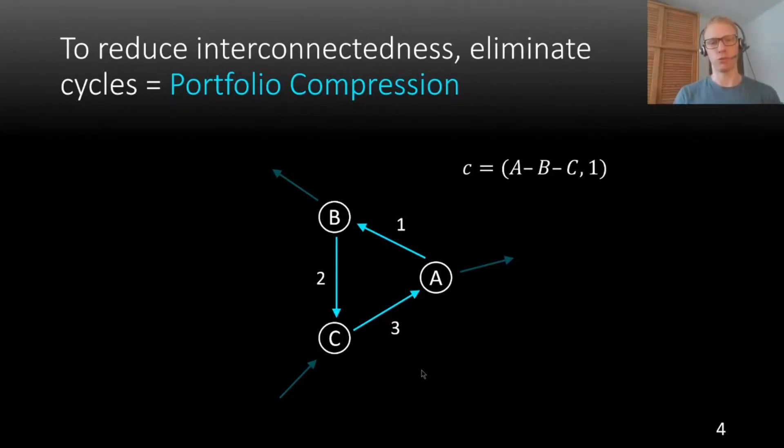So if now this compression is executed, we reduce the amount on each edge by one, and we receive this network, and we have just reduced interconnectedness. We may expect that this will also reduce systemic risk.